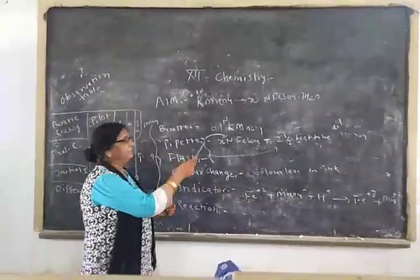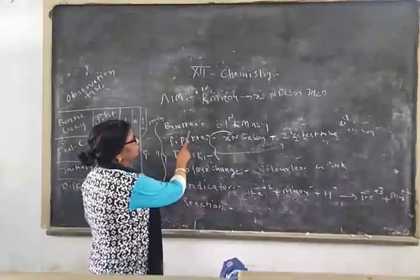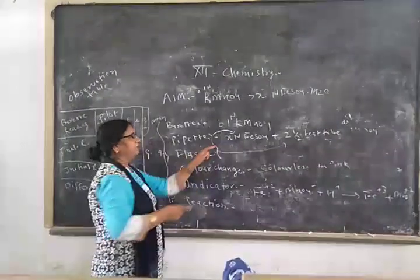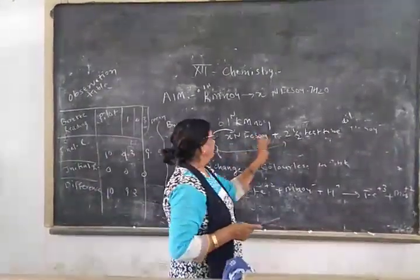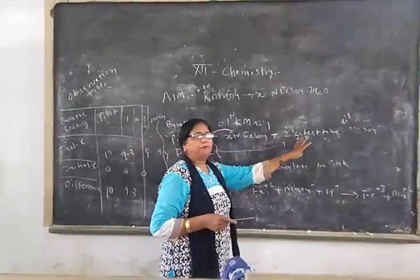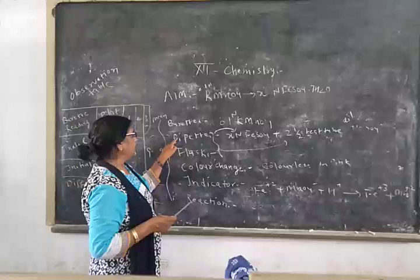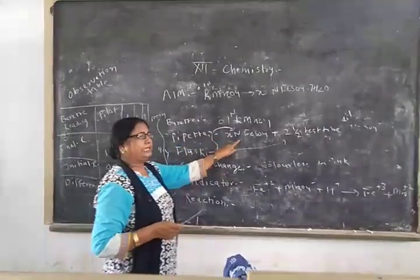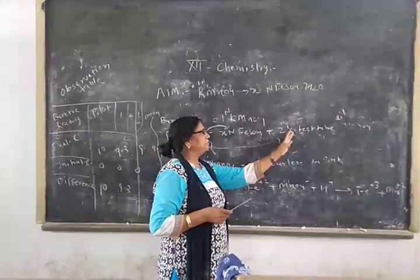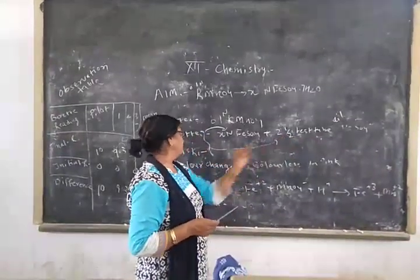So students, in burette we are taking 0.1 normal KMnO4. In pipette we are taking X-normal FeSO4. Combined in flask we are taking 2.5 test tubes of sulfuric acid. So with pipette, you have to take X-normal FeSO4 and 2.5 test tubes of approximately 25 ml of H2SO4.